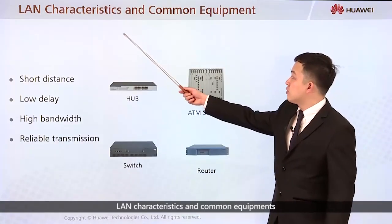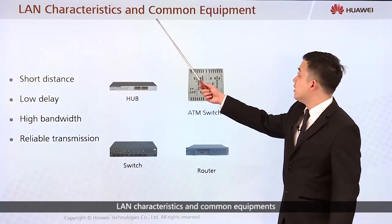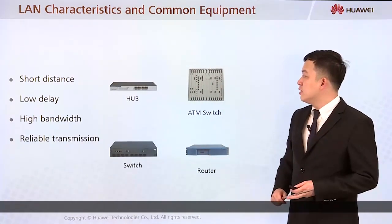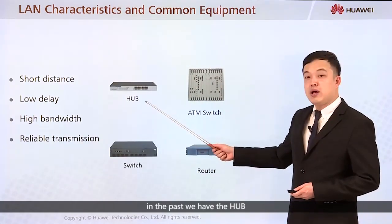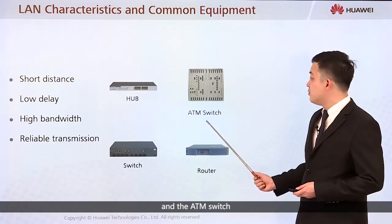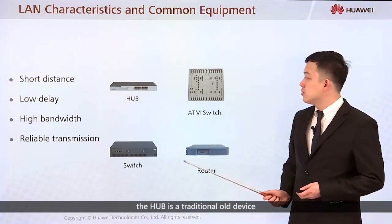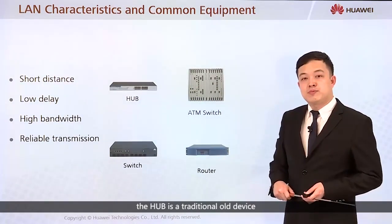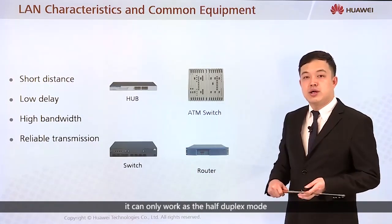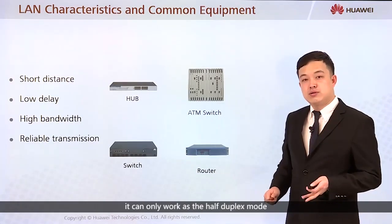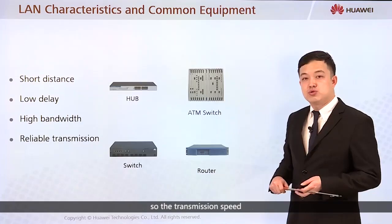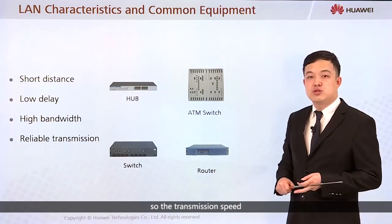Now let's look at LAN characteristics and common equipment. In the past we had the hub and the ATM switch. The hub is a traditional old device — it can only work in half-duplex mode, so the transmission speed is very slow.